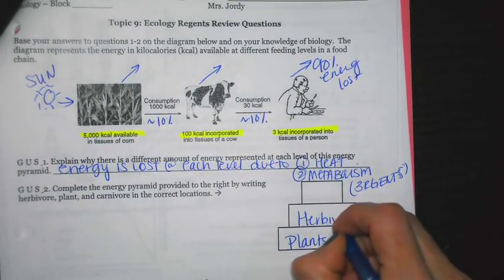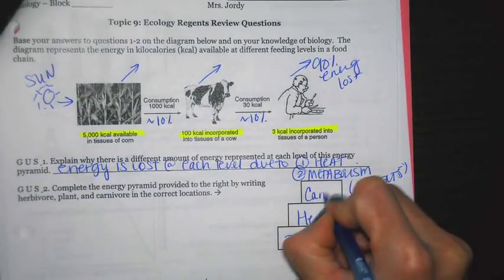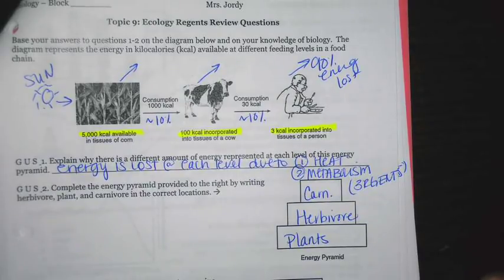After that, you've got herbivore. Herbivores are the types of organisms that need to consume plants. And then finally at the top, you're going to have a carnivore. Carnivores are organisms that eat other animals. A wolf, a fox.